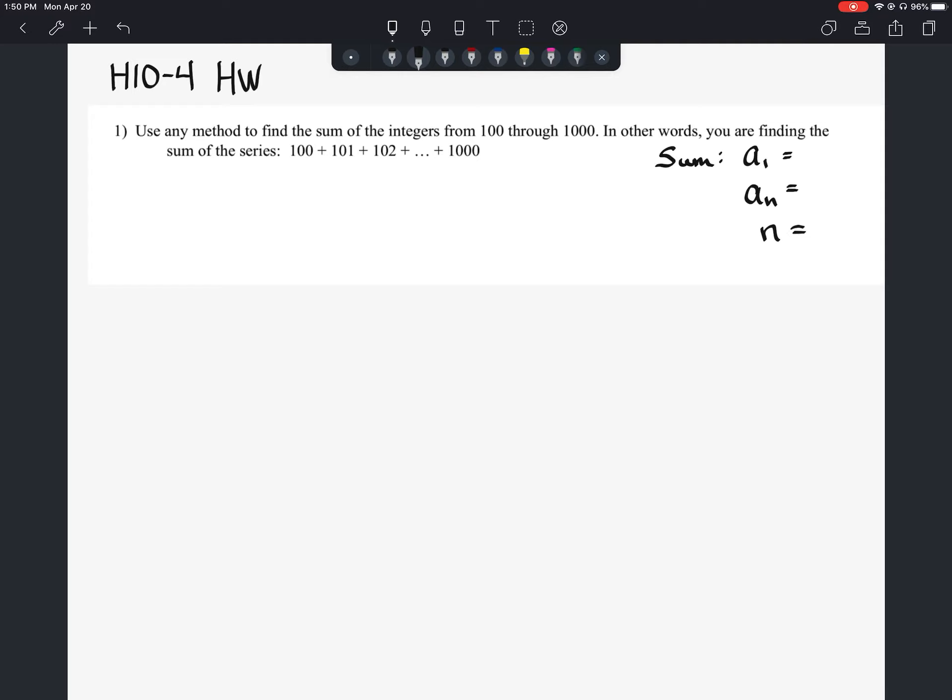So when we look at this series, we definitely know that our first term is 100. That would make 101 the second term, 102 the third term, and so on. We have the last term we know is 1000, but we don't know what n is.